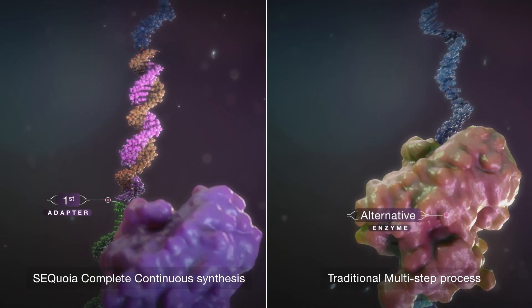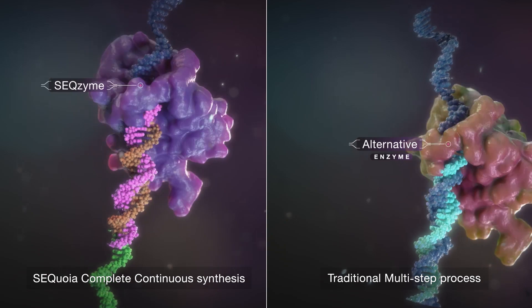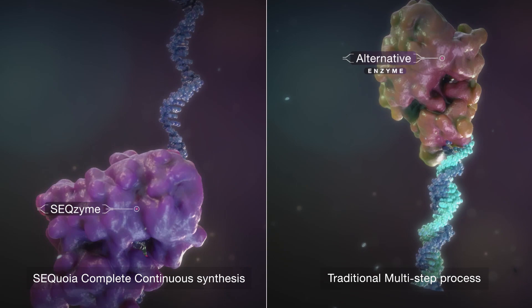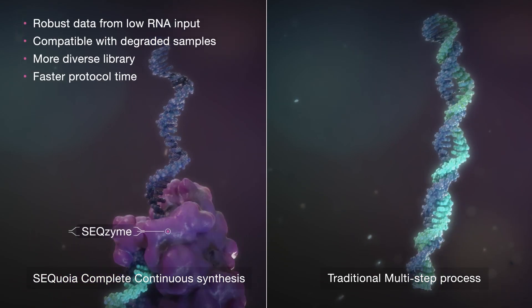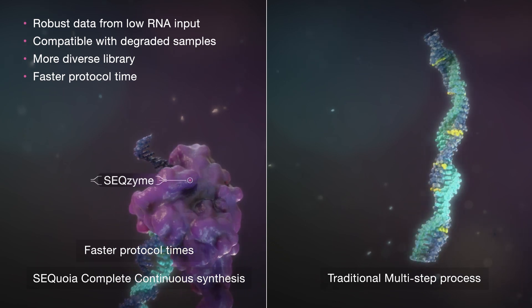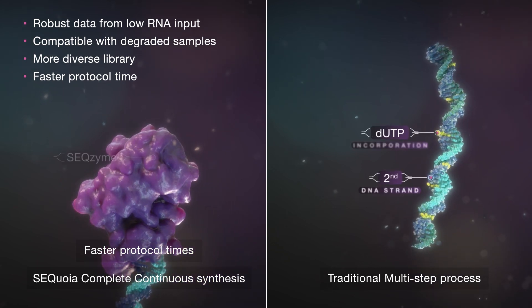SEQzyme is unique. It incorporates the adapter sequences at both ends of the RNA fragment in a single, continuous synthesis step that eliminates the need for hybridization or the addition of non-template bases used in other kits.